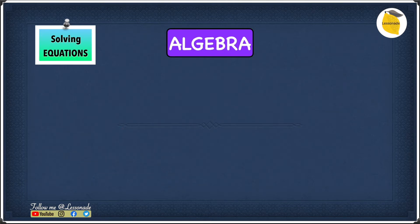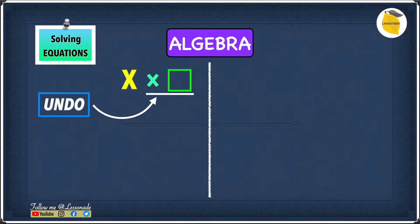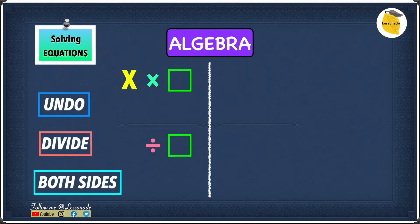To understand this better, let's have a look at this example: x times any specific number. To undo this number, what we have to do is firstly divide by that exact same number. We need to divide because to undo multiplication we have to do division, since multiplication and division are inverse operations. And we need to do this division on both sides, because otherwise the equation won't be equal or balanced.